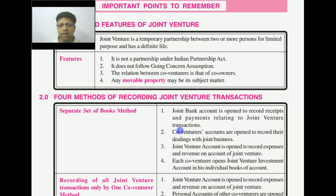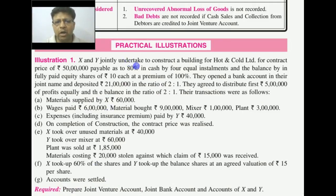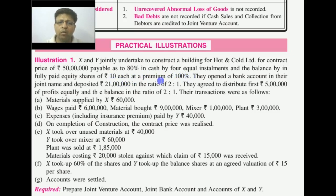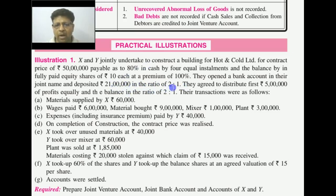Let's discuss the first case with an example. Action Wide Joint D undertook to construct a building for Hot and Cold Limited. The contract price is Rs. 50,000,000 — 50% to be received in cash in 4 installments and the balance in fully paid shares of Rs. 10 each at a premium of 100%. So Rs. 40,000,000 is received in installments and Rs. 10,000,000 is received in shares. They opened a bank account in their joint name and both contributed Rs. 21,000,000 in the ratio of 2:1.